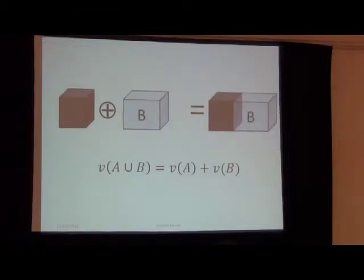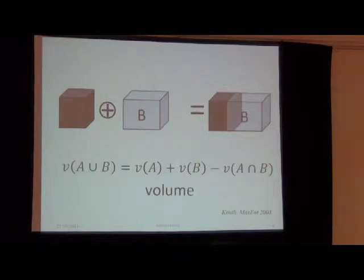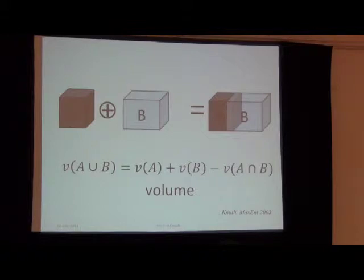On slide six, you can see that this also works for volumes. Here's an example where I have two rectangular polytopes that are joined by abutting them, and in this case the volumes add. Not only do the volumes add, but if Philip goes to slide seven, you'll see that if the polytopes overlap to some degree, you don't quite get addition anymore — you have to subtract off this intersection term that you see there on the right.